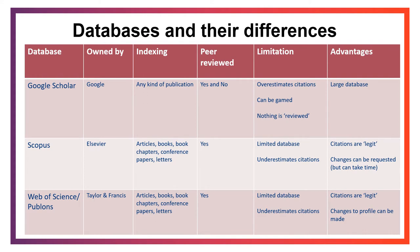This means corrections can take time. Web of Science is another limited database in its coverage. It was recently bought by Publons and is linked to Researcher ID. There is a lot of overlap between Web of Science and Scopus, so the advantages and disadvantages are similar, though the coverage between the two will vary. Overall, there is some personal preference involved when considering which database to use, but you will find different people may ask for data from different databases, so it's important to keep an eye on your profiles across different databases.